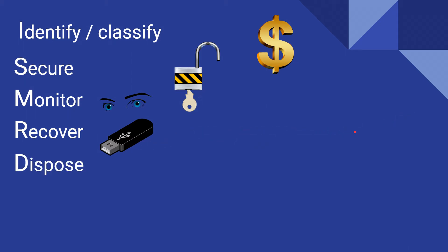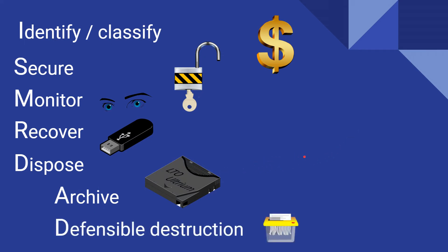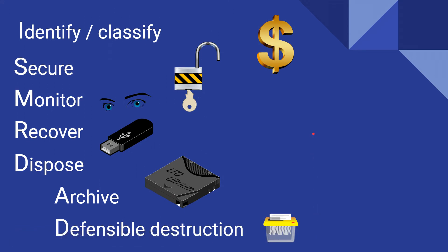The next step is dispose, and that has two sub-steps: archive — we have our archive backup tape here — and then defensible destruction. As you can see, the first letters spell out our acronym.